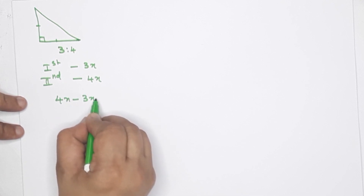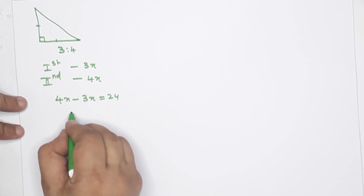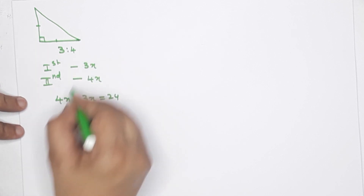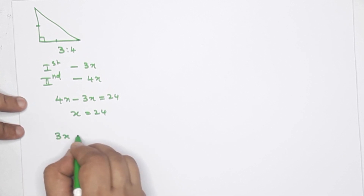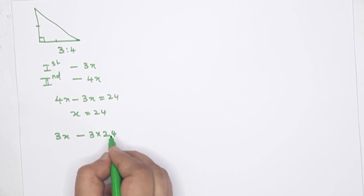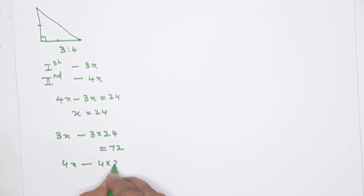The difference is 4x minus 3x, that is equal to 24. So x equals 24. The first side is 3x: 3 into 24, we get 72. Then the other side is 4x: 4 into 24, we get 96.